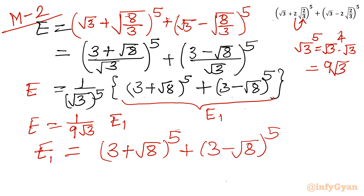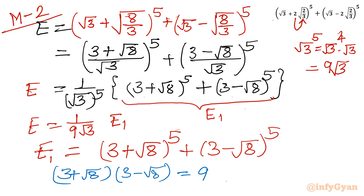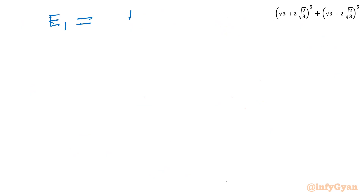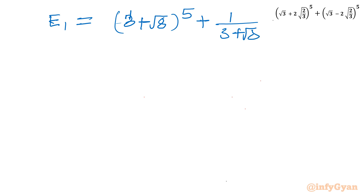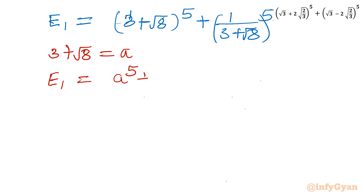One key observation: (3 + √8)(3 − √8) = 9 − 8 = 1. So 3 − √8 = 1/(3 + √8). Letting a = 3 + √8, our expression E1 becomes a⁵ + 1/a⁵.